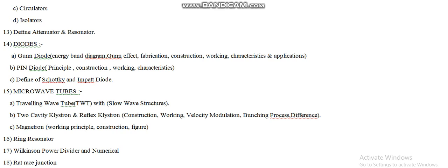Moving on to the next part, the two-cavity klystron and the reflex klystron. There is a very major difference between these two types of klystron. The examiner can ask for the differences between them, and also ask for the construction, working, bunching process, and velocity modulation of these two klystrons separately. Velocity modulation is the working principle of the two-cavity klystron, and it can also appear as a two-mark question.